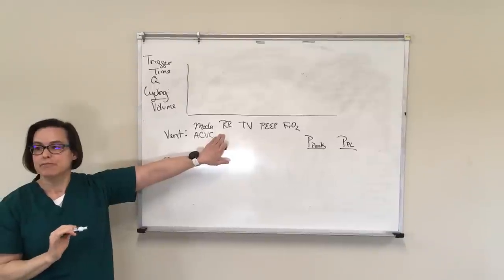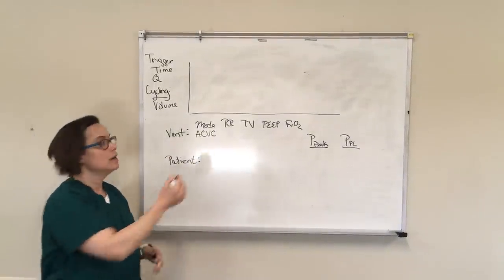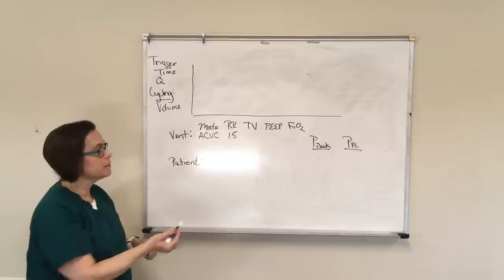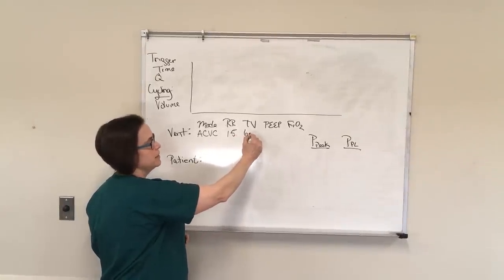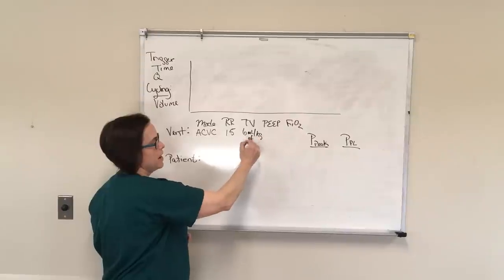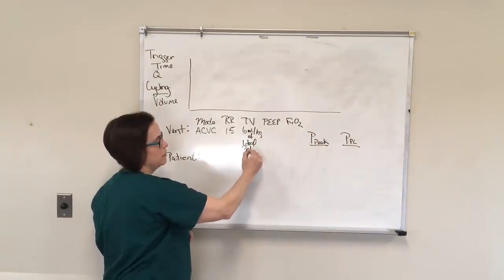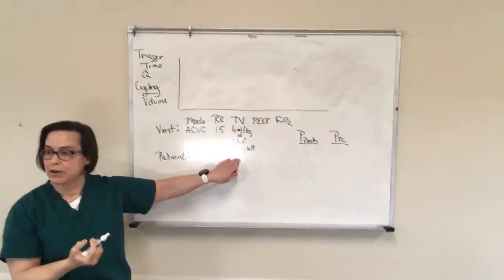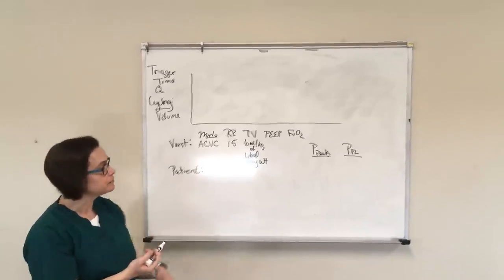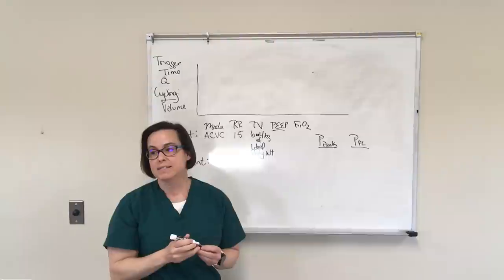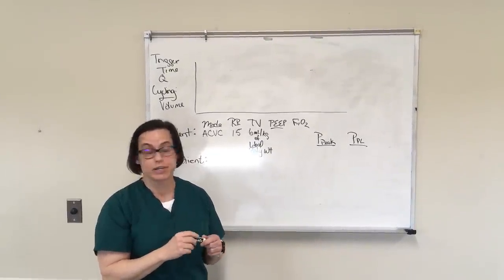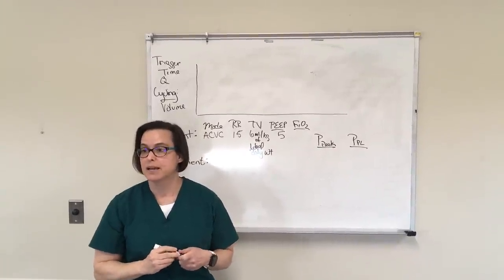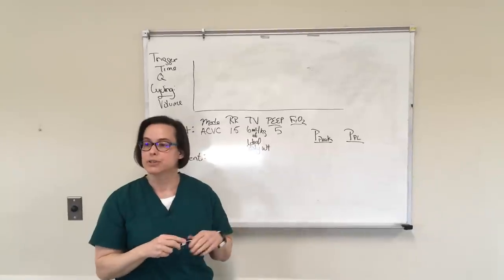For a respiratory rate, a pretty safe place to always start is going to be around 15, really anywhere from 12 to 20 depending on your situation, but 15 is a pretty good starting point. Your tidal volume, we always want this to be six milliliters per kilogram of ideal body weight. So ideal body weight is actually based on height, not on weight. So keep that in mind, have a calculator available so you can calculate your patient's ideal body weight. Your PEEP is your positive end expiratory pressure. And generally for that, we're going to start at five. We may really need to increase that over time based on how hypoxic our patients become, but five is a good starting point as you're getting rolling.